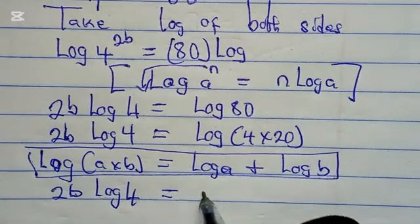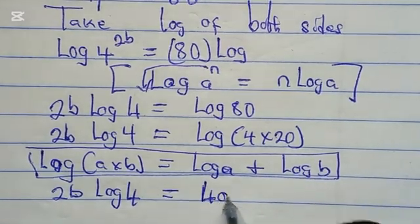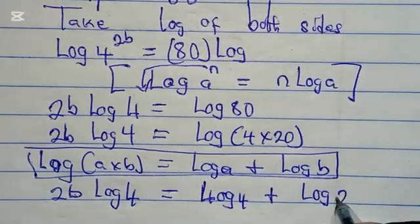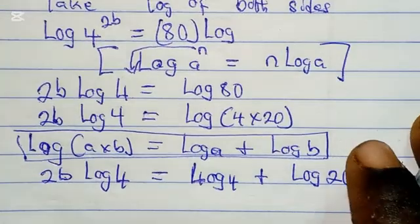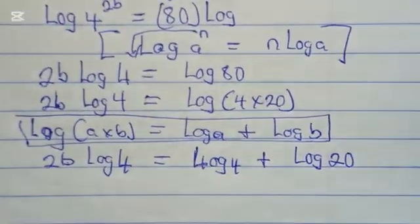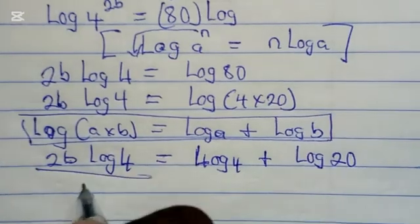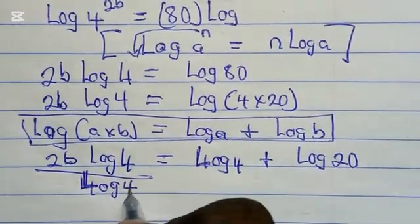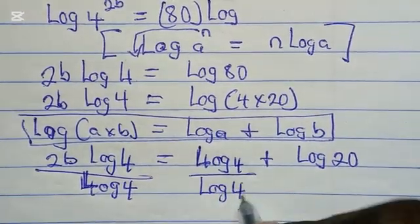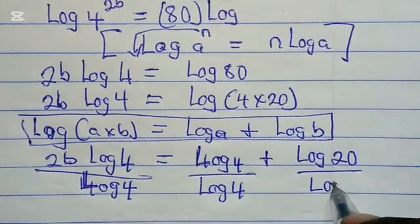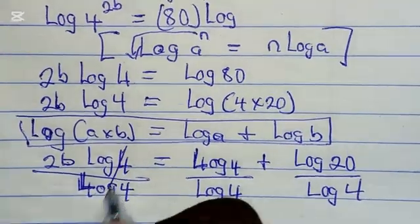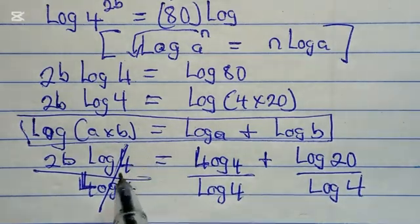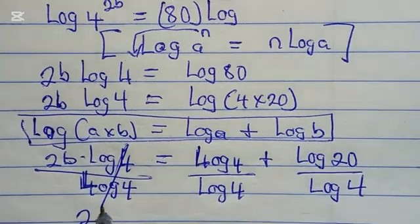2b log 4 = log 4 + log 20. Let's divide both sides by log 4. These cancel each other, and this gives us 1. 2b times 1 is 2b.